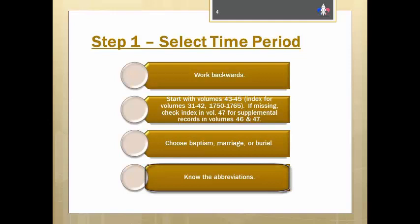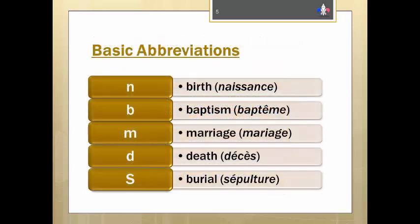Now before we take a look at how to use the indexes, we're going to first take a look at some of the abbreviations that you'll come across as you use these volumes. First, we have the basic abbreviations, but yet abbreviations that are sometimes confused by the beginner. A beginner often thinks that the abbreviation B stands for birth, but it stands for the French word baptême, which is baptism.